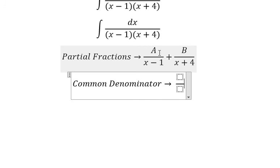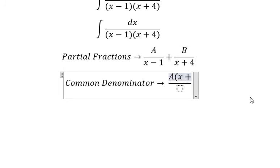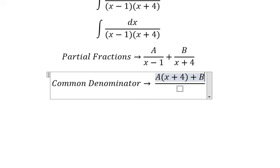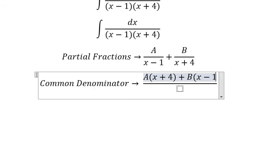So we get A multiplied with x plus 4 and capital B multiplied with x minus 1.